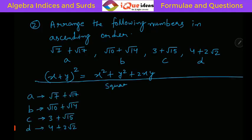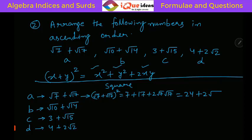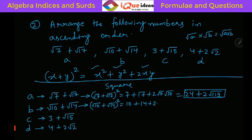The square of A = (√7 + √17)² = 7 + 17 + 2√(7×17) = 24 + 2√119, since √a × √b = √(ab). The square of B = (√10 + √14)² = 10 + 14 + 2√(10×14) = 24 + 2√140.